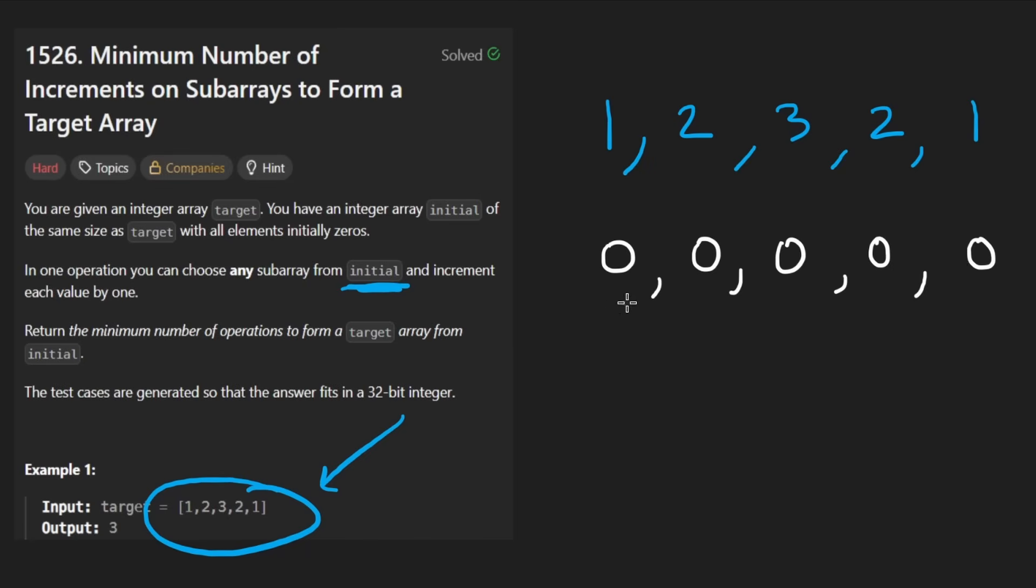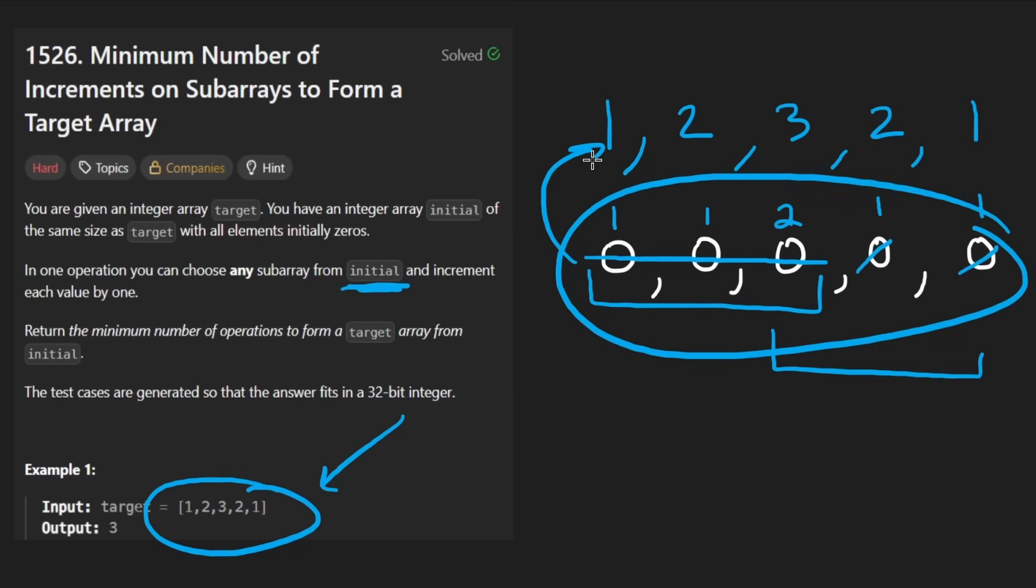So I'll kind of just draw this over here and then below that the initial array is going to be of the exact same size. So in this case, five elements, but they're all going to be zero. So that's pretty simple. What we want to do is transform this one into the target array.